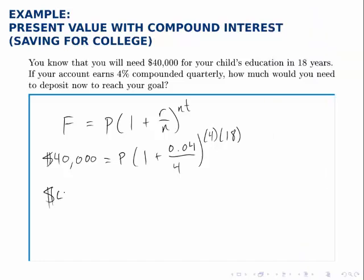So I have 40,000 equals P times 2.047, et cetera, but I have to round it off somewhere, so I'll round it off there.